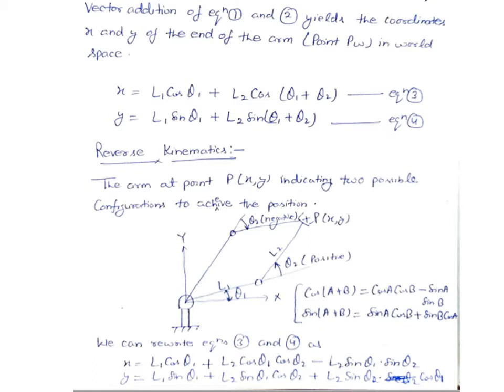If you want to achieve position point P and the Cartesian coordinates x and y are given, you must calculate the reverse configuration — the angles theta one and theta two. There are two possible configurations: in one configuration theta two is positive, and in the other configuration theta two is negative.